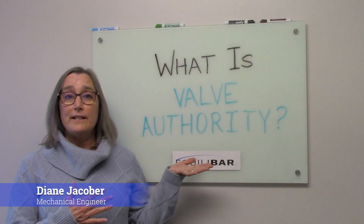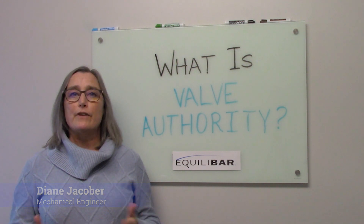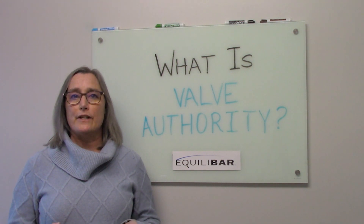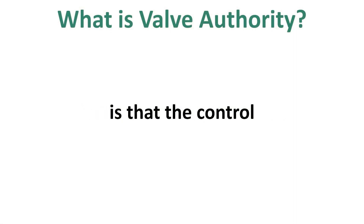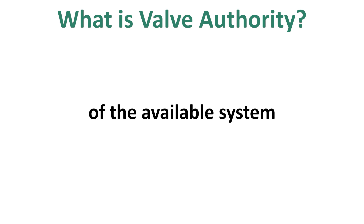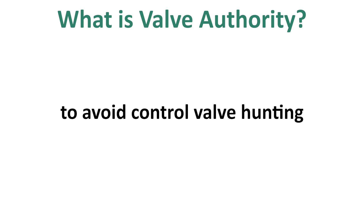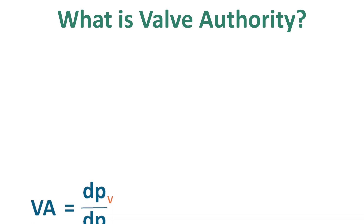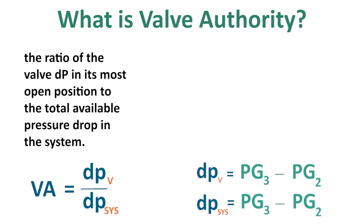What is valve authority? Engineers who size control valves use the term valve authority to avoid selecting a valve that's too large for the application. A common rule of thumb is that the control valve needs to consume at least 25 percent of the available system pressure drop in its most open position to avoid control valve hunting. Valve authority is the ratio of the valve DP in its most open position to the total available pressure drop in the system.